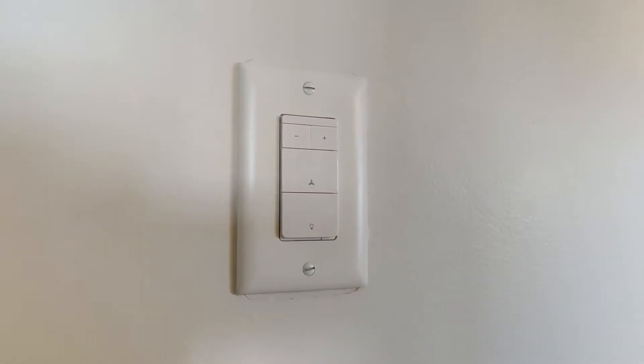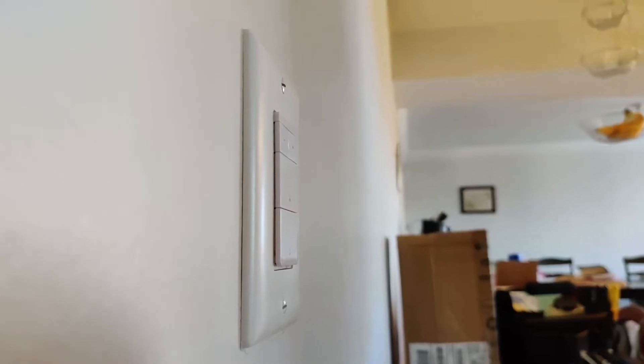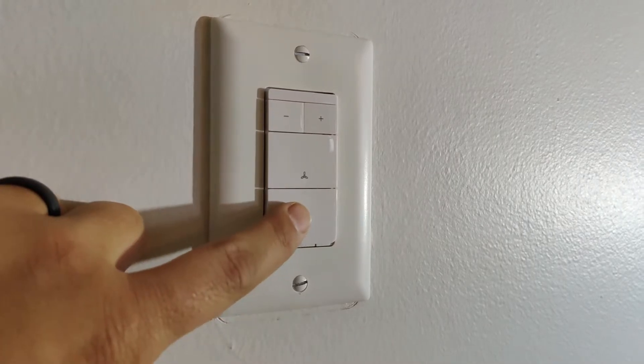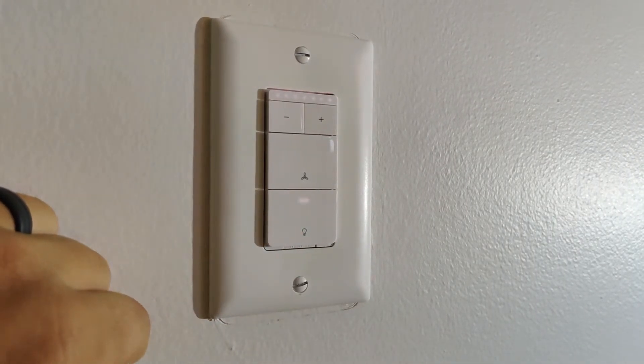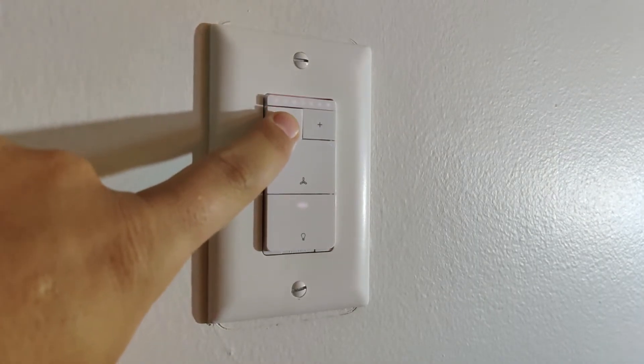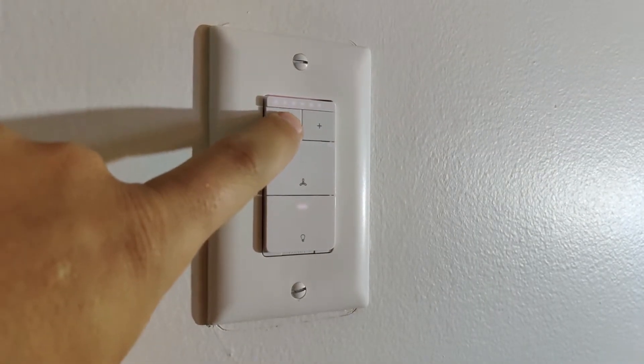So once you connect it all up and turn the power on the last thing left to do is to connect it to the Smart Life app which they give you instructions on how to do. And then you want to connect that to Google Home or Alexa. I'm not going to go over how to do that here but it's very simple.